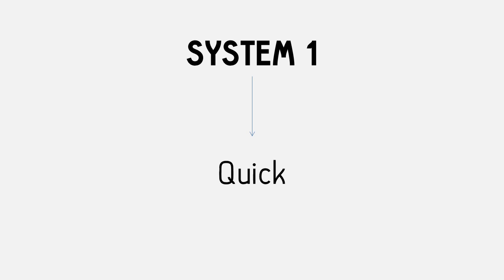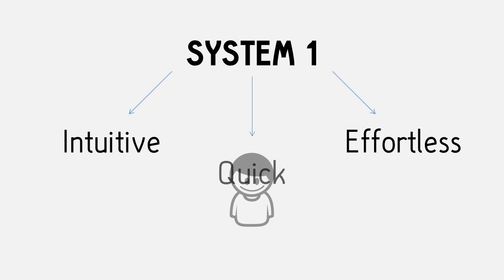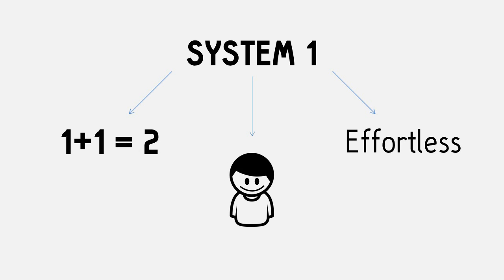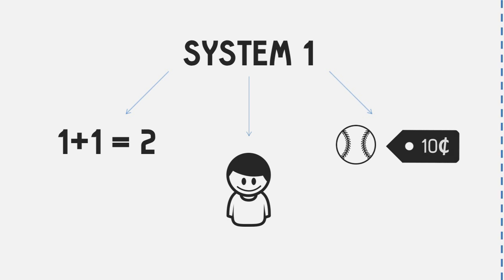System 1 thinking is quick, intuitive, and effortless. It's the type of processing that helps you instantly recognize faces, answer questions like 1 plus 1, and say 10 cents to the bat and ball problem.